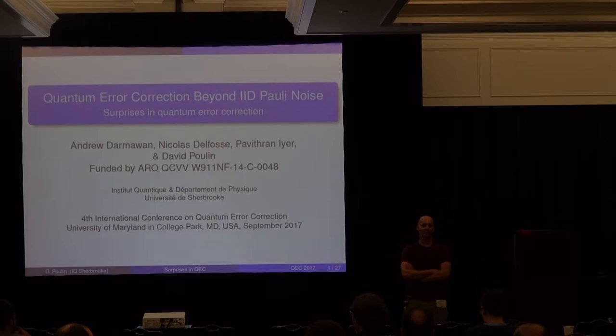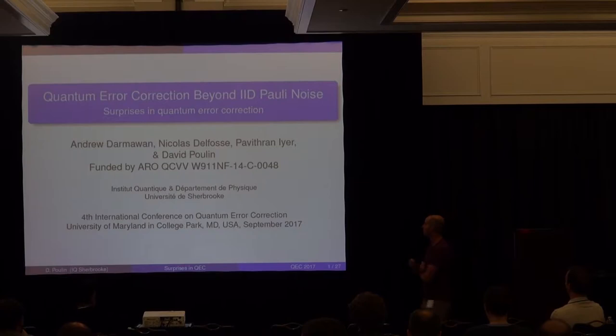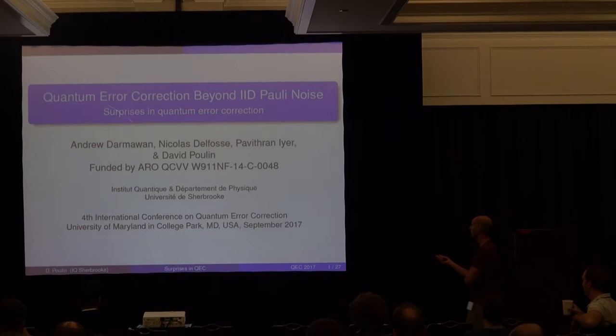The speaker is David Poulin, and this talk is on surprises in quantum error correction — or perhaps a more accurate title is 'quantum error correction beyond the IID-Pauli noise model.' The work being presented was done by Andrew and Pavitran, with some ideas also borrowed from Nikola.